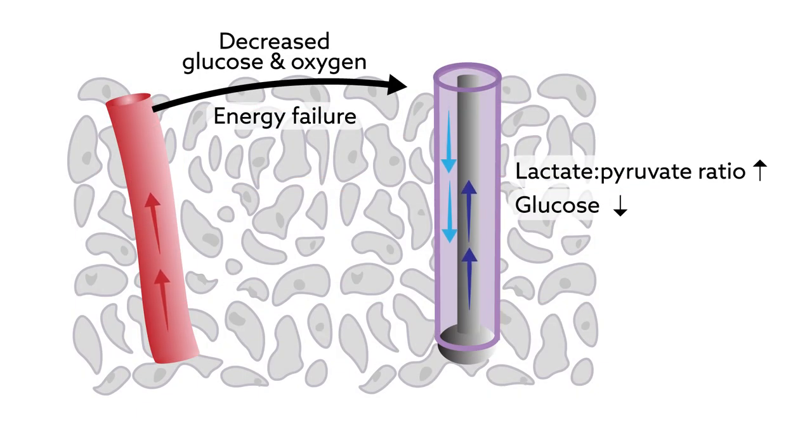Energy dysfunction is another key factor in traumatic brain injury pathophysiology that is not identified by routine neuromonitoring. Cerebral microdialysis can assess markers of cellular processes associated with glucose metabolism, oxygen supply, and cellular energy failure.